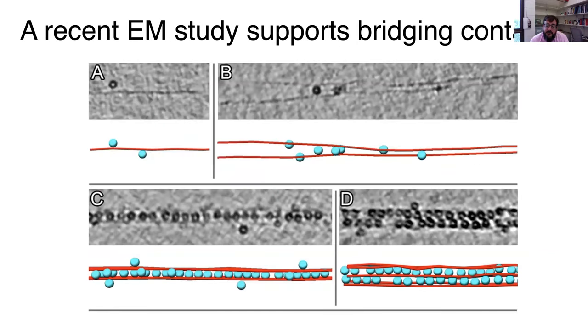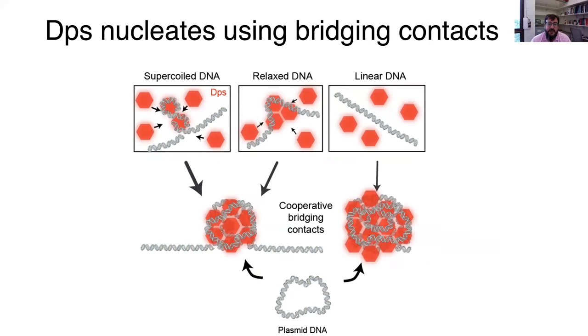There was also just recently a paper that came out while we were submitting this work. And that shows these EM images that seem to show DPS trying to zip up to pieces of DNA. So again, that supports this idea of bridging contacts between neighboring DNA molecules.